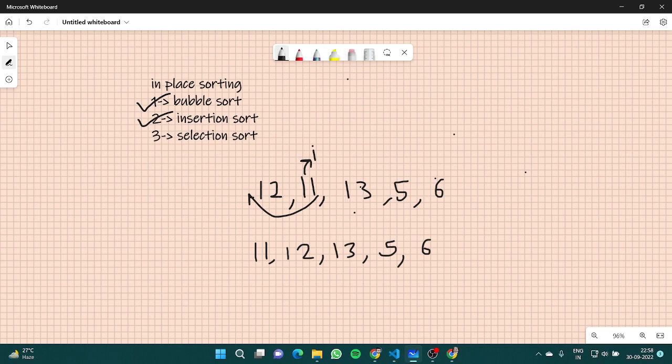So we won't be changing anything. i would be here at 5. Now for 5, we can see that in its previous subarray it should be at the first place. So the array becomes [5, 11, 12, 13, 6].